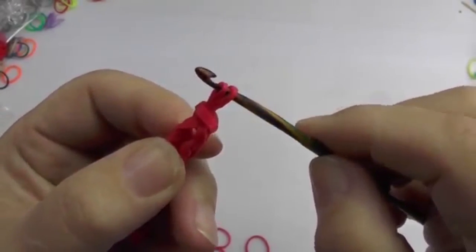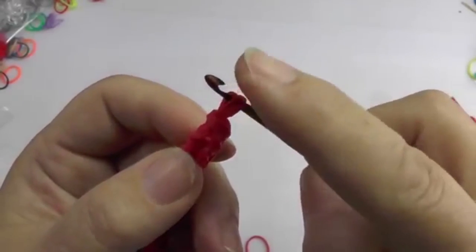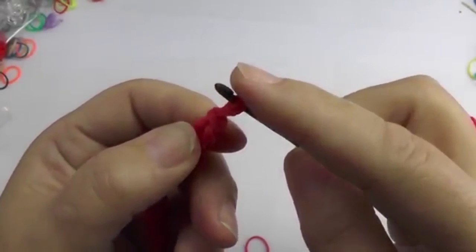Now take these two, the left pair, and pull through the right pair so that you only get two bands on your needle.